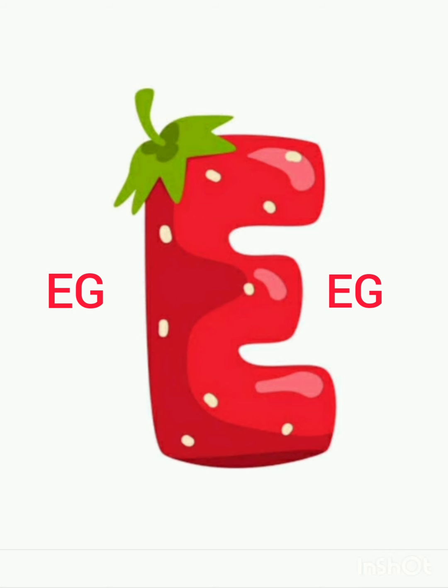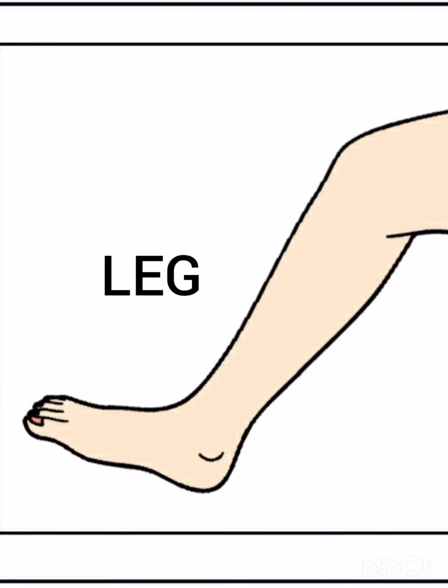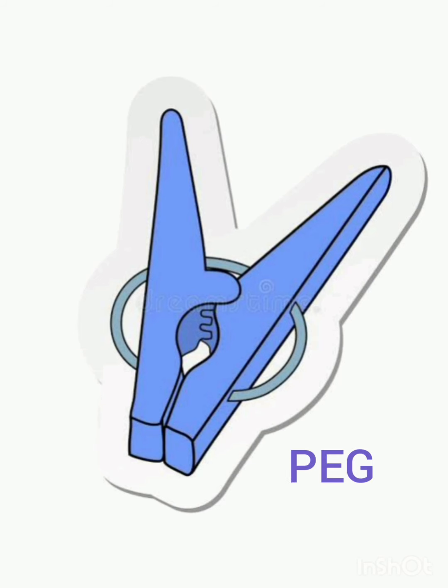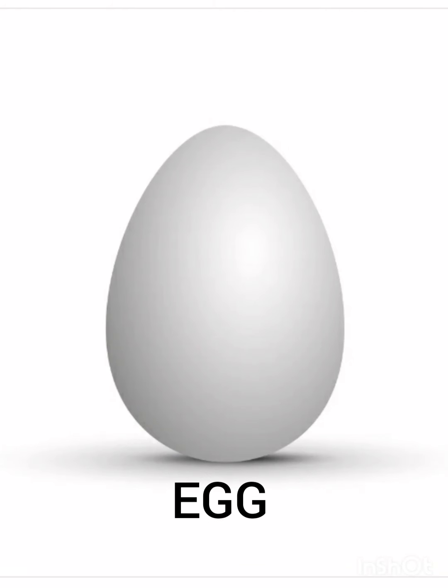Let's say each word two times. Ready? Start. Leg, leg. Beg, beg. Peg, peg. Egg, egg.